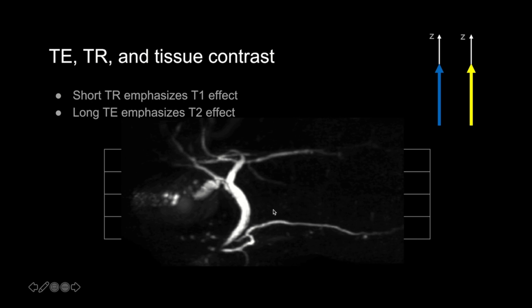Water is very bright on T2-weighted images because it has a long T2 relaxation time. If we emphasize T2 effects to a very high degree, signal is lost everywhere else and only the water — or things like water — maintain their signal. MRCPs therefore use very long TEs. Long TEs emphasize the T2 effect, so the bile ducts and pancreatic duct maintain their signal while most other things lose it, giving us great images.